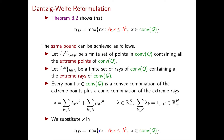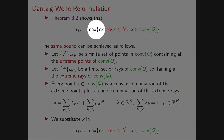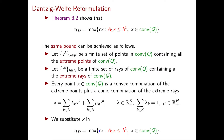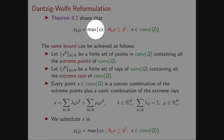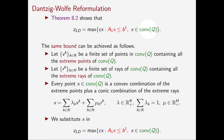The Dantzig-Wolfe reformulation is essentially another way of obtaining the same exact bound, and geometrically it is very simple to understand starting from this maximization problem. What we want to do is write the convex hull of Q as the convex hull of a finite set of points plus the conic hull of a finite set of rays.